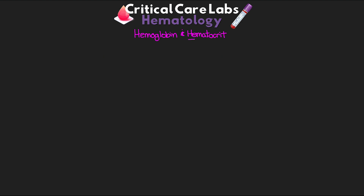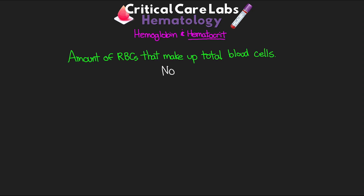Now let's talk about our hematocrit. This value is a measurement of the amount of red blood cells that make up our total blood volume. For our normal values, these also differ in men and women. For men, the normal value is going to be 40 to 50%, and for women, 37 to 47%. This value has to be evaluated in conjunction with hemoglobin. As a quick gauge, we expect a 3-to-1 relationship — so if you have a hemoglobin of 12, you should expect to see a hematocrit of around 36.